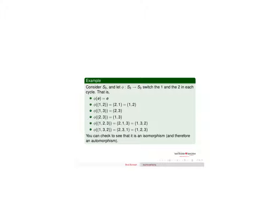The identity stays the identity since 1 and 2 are both fixed. If you have (1,2), I swap the 1 and 2 and get the same thing. For (1,3), I swap 1 and 2 to get (2,3). For (2,3), swapping 1 and 2 gives (1,3). Then (1,2,3) becomes (2,1,3) which equals (1,3,2), and (1,3,2) becomes (2,3,1) which equals (1,2,3). It's definitely one-to-one and onto, and you can check that it's a homomorphism. It is.